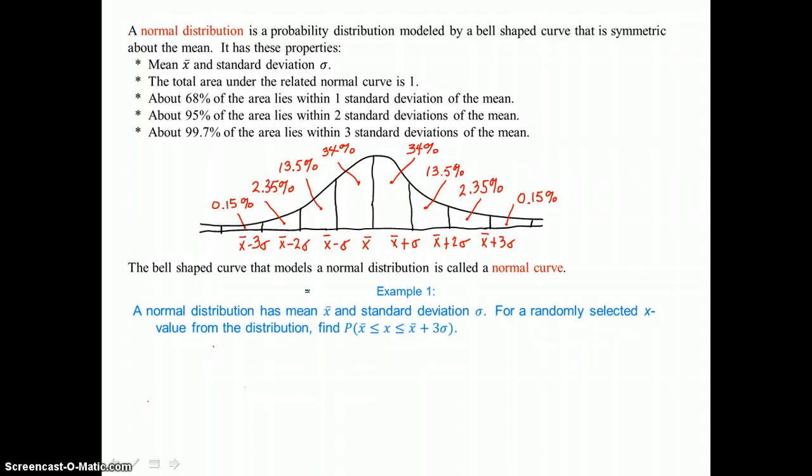About 95 percent of the area lies within two standard deviations of the mean, so you'd add up 13.5 percent, 34 percent, 34 percent, and 13.5 percent to get that 95 percent.